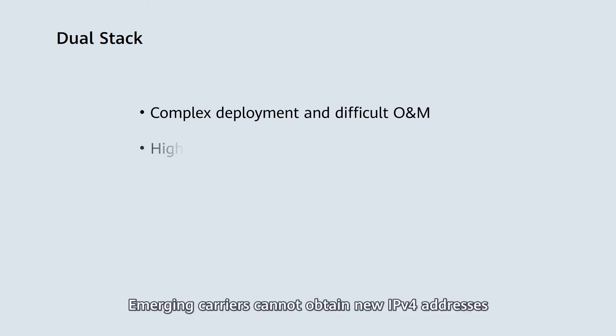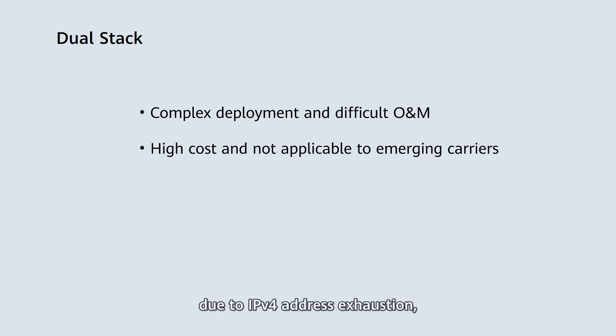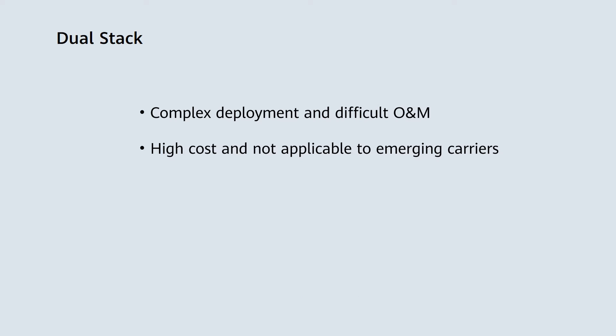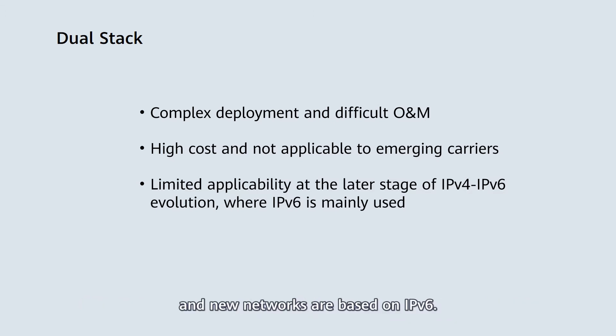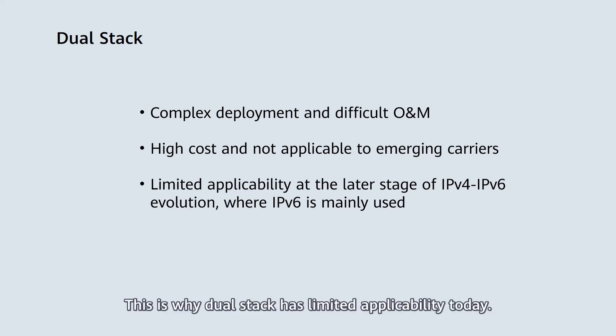Emerging carriers cannot obtain new IPv4 addresses due to IPv4 address exhaustion, and deploying dual stack involves high costs. Furthermore, the evolution to IPv6 means that most new services and new networks are based on IPv6. This is why dual stack has limited applicability today.